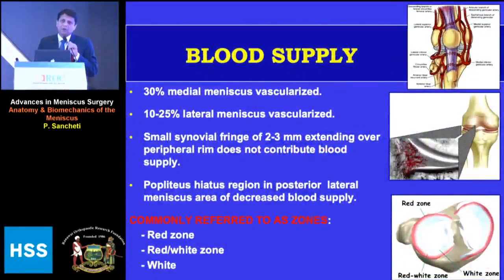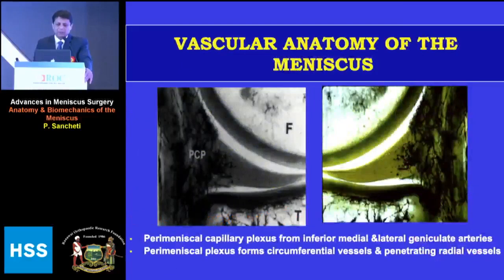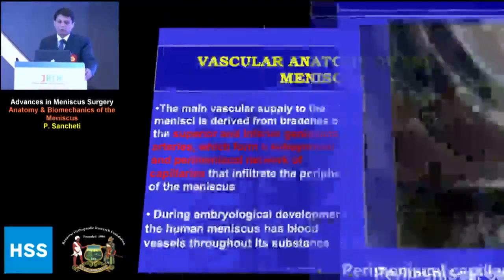The most important part of the anatomy is the blood supply of the meniscus, which is very peculiar and has a definite impact on management. The peripheral part, nearly 25 to 30 percent, is vascular, and the remaining part — the middle third and especially the inner white-white zone — is avascular. The majority of blood supply comes from the inferior medial and lateral geniculate arteries, which form a perimeniscal plexus that penetrates radial vessels. The nerve supply follows the blood supply.